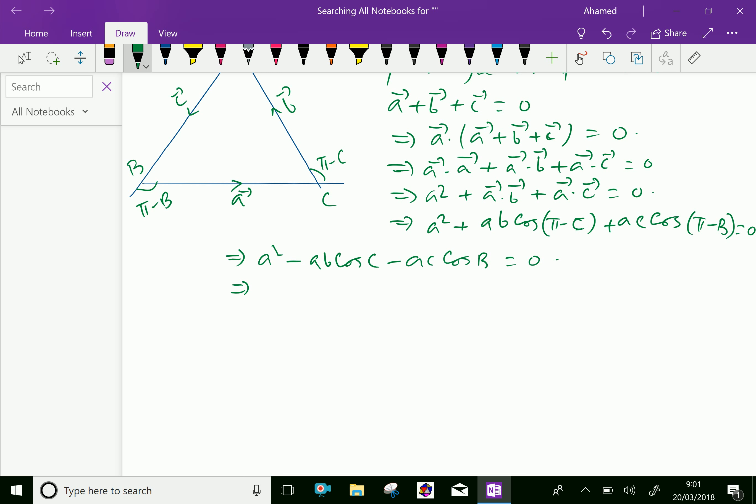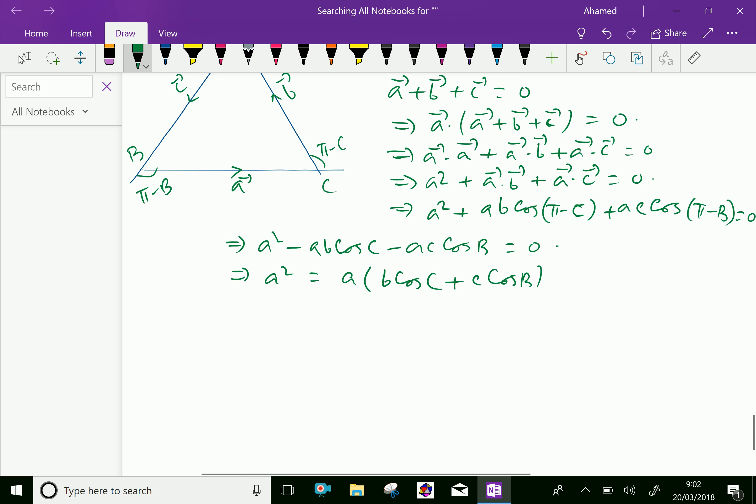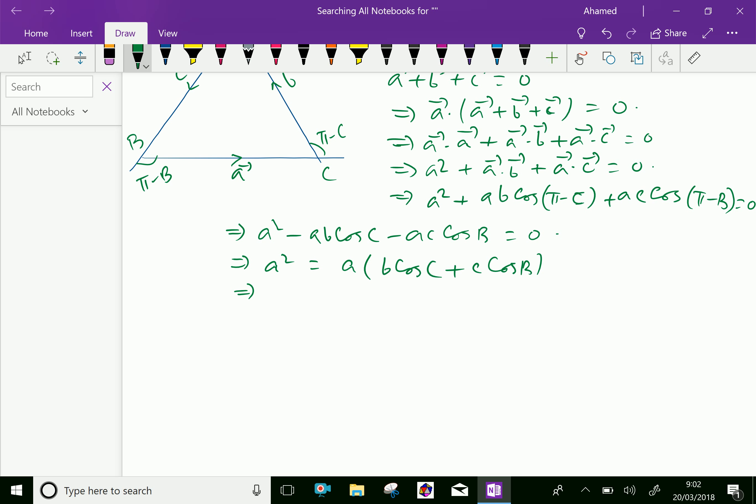Which further, a squared equals, a is common, b cos c plus c cos b, which is given further a equals, square root both sides, we can write a equals b cos c plus c cos b.